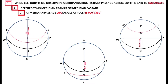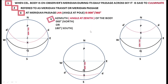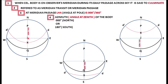LHA is the angle at the poles, and as you can see there is no angle being made between X and P. So at meridian transit, LHA is 0 or 360, and that is how we have been finding out the time for meridian passage. Azimuth is the angle at the zenith.